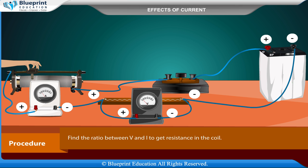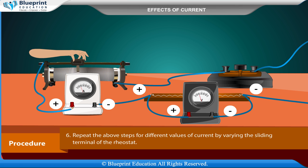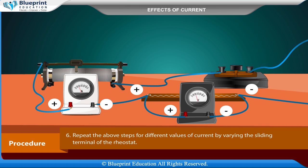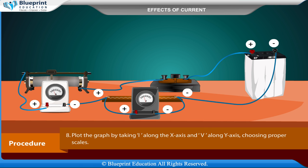Change the position of the slider in the rheostat such that the current flowing is changed. Note down the values of V and I. Find the ratio between V and I to get resistance in the coil. Repeat the above steps for different values of current by varying the sliding terminal of the rheostat. Tabulate all the observations and find the ratio of V upon I for each set of observations. Find the mean value of R. Plot the graph by taking I along the x-axis and V along the y-axis, choosing proper scales.